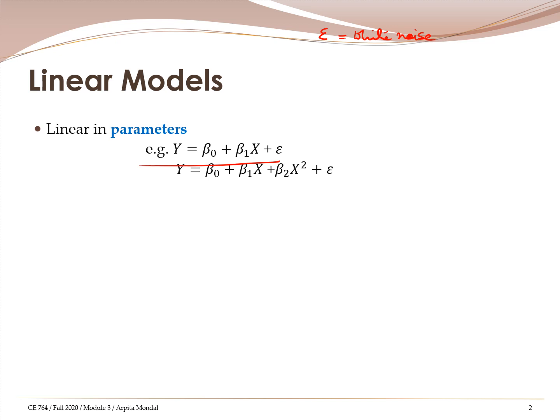What about a model where y equals beta-naught plus beta-1 times x plus beta-2 times x-squared? We have a squared term involved. Intuitively you would say that this is a non-linear model, however in statistics we would still call it a linear model because it is linear in terms of the parameters beta-naught, beta-1, and beta-2.